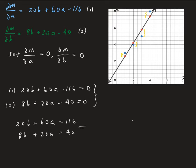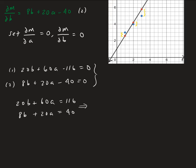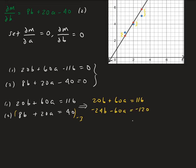We can solve this using the elimination method. I'll multiply the second equation by minus three to eliminate A, giving us minus 24B − 60A = −120. Adding that to 20B + 60A = 116, we get minus 4B = −4, which implies B equals 1.